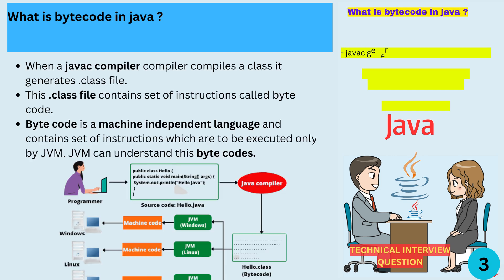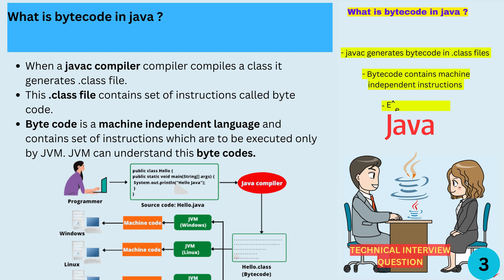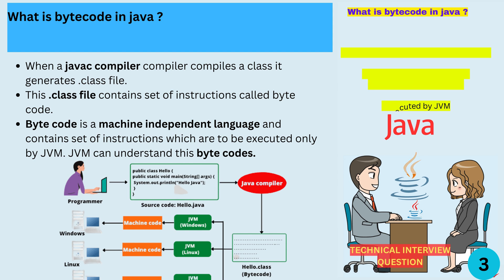What is bytecode, and how is it different from machine code? When the Java compiler compiles a class, it generates a .class file. This .class file contains a set of instructions called bytecode. Bytecode is a machine-independent language and contains a set of instructions that are only executed by the JVM. The JVM is able to understand these bytecodes.